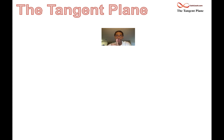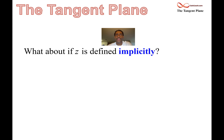In the previous two videos, we discussed the concept of how to find the equation of a tangent plane when z is defined explicitly as a function of x and y. In the second video, we looked at some calculations where you get a choice of deciding whether you want to find the equation of the tangent plane using a slope-intercept form or a point-slope form — we did one example of each. Now we want to study the question: what if the function is defined implicitly as a function of x and y?